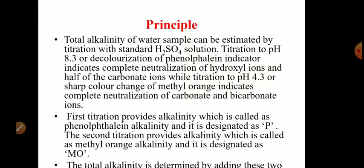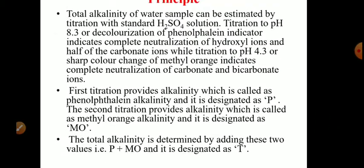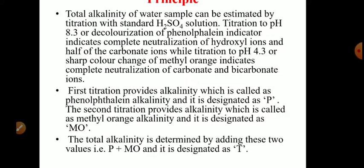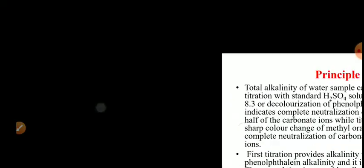This titration is followed by a second titration to a pH of 4.3, or a sharp color change of the methyl orange indicator, which indicates complete neutralization of carbonate and bicarbonate ions. The first titration provides phenolphthalein alkalinity, designated by the letter P. The second titration provides methyl orange alkalinity, designated as MO. Total alkalinity T is determined by adding P plus MO.